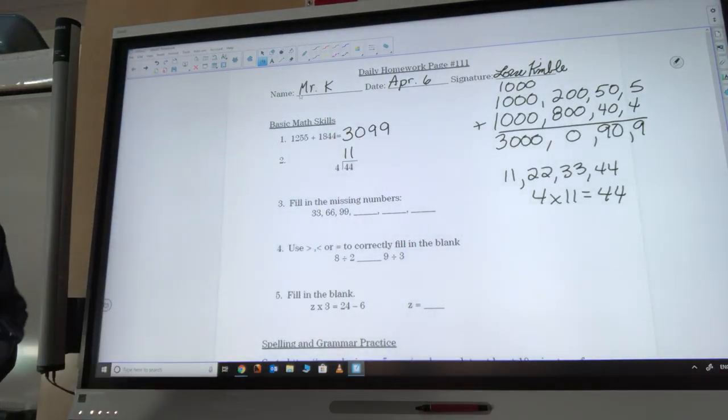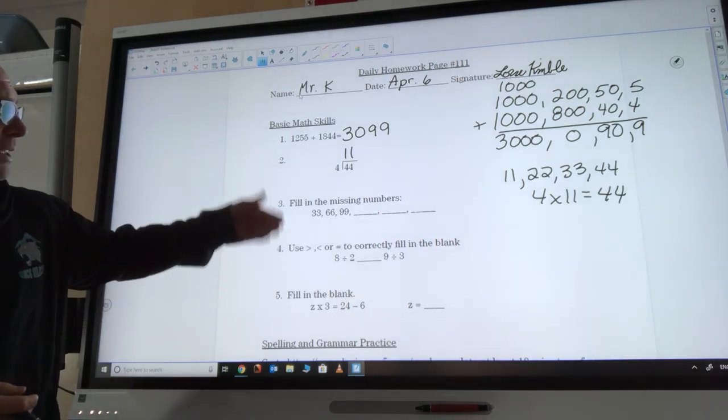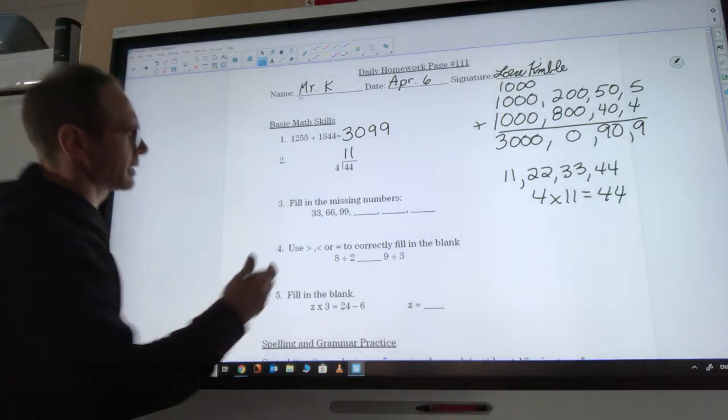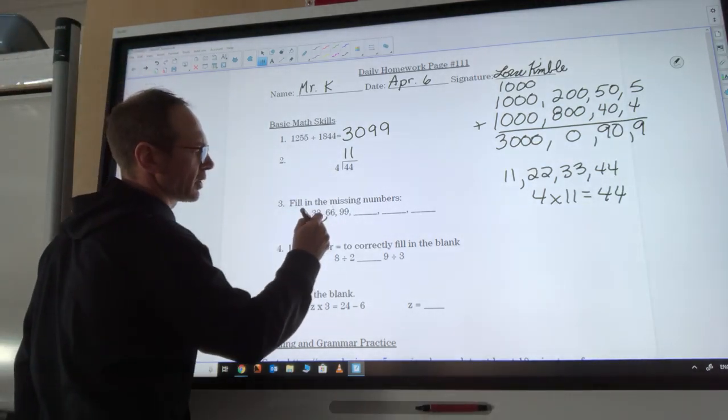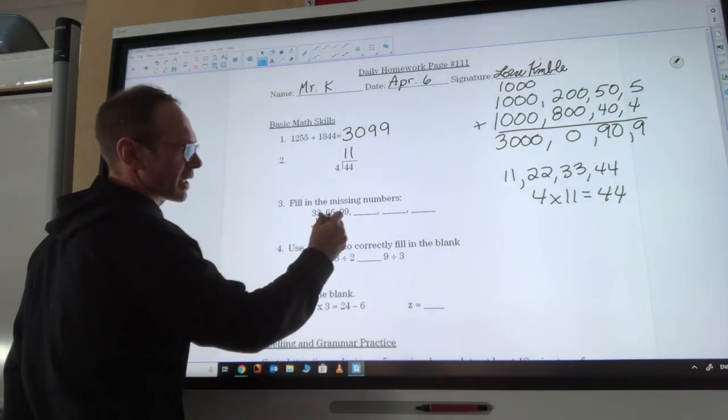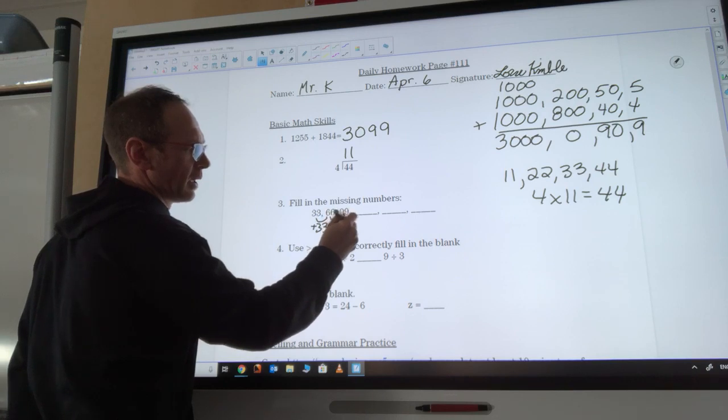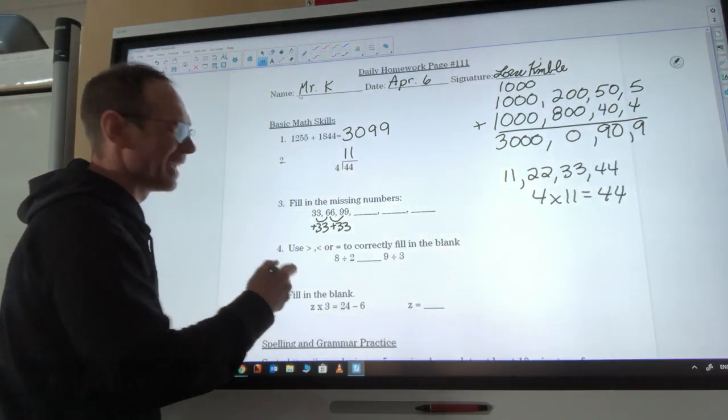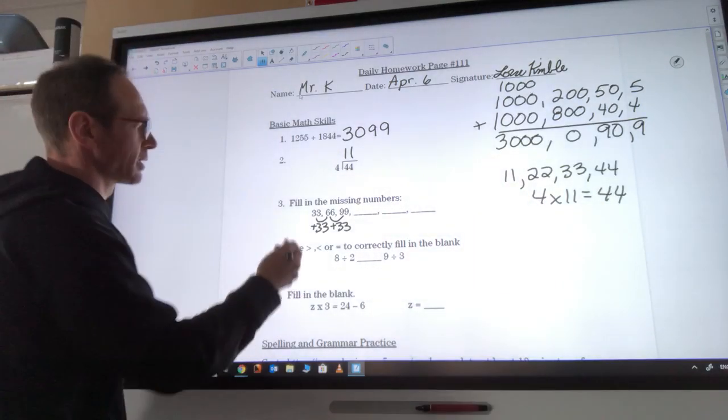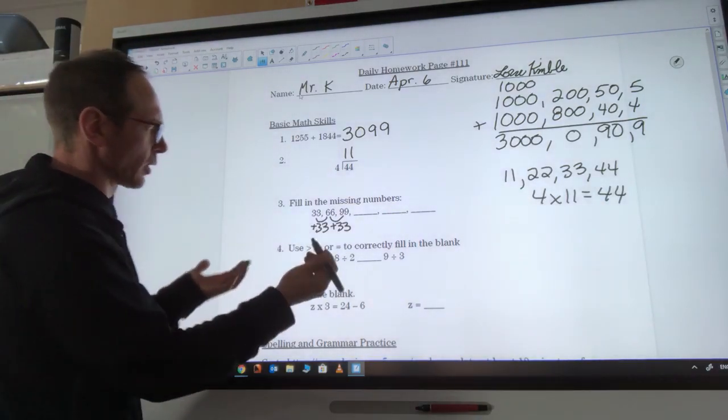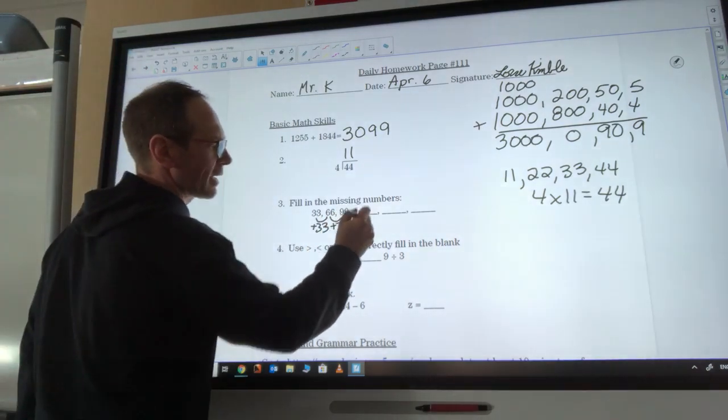Our next question here, we were looking at 33, 66, 99, blank, blank, blank, blank. What's the pattern? Well, if I look at this, I say 33 plus 33 makes 66. 66 plus another 33 will get me to 99. So what I'm doing is I'm adding 33 each time. It actually is a lot harder than it looks when you get past these first three because it's like, what's going on next here, right? We are adding 33.